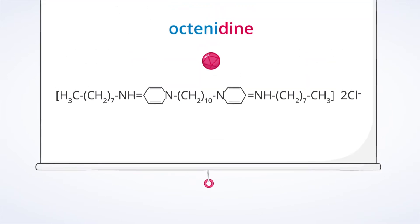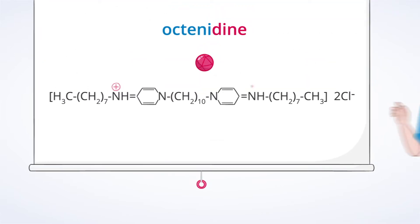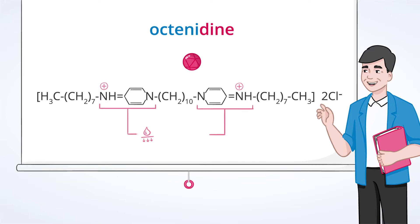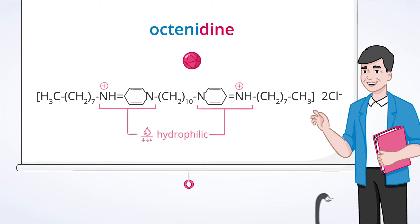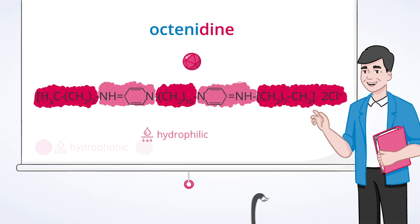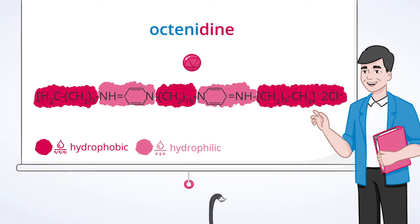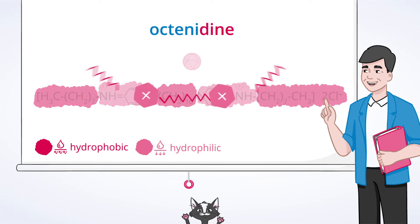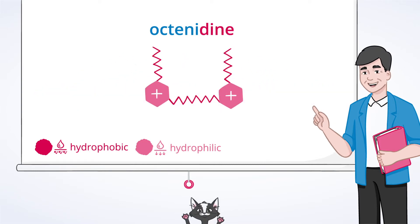Octenidin has two positively charged centers and is thus highly water soluble — it is hydrophilic. Due to long hydrocarbon chains, the molecule also has water repellent, respectively hydrophobic characteristics.